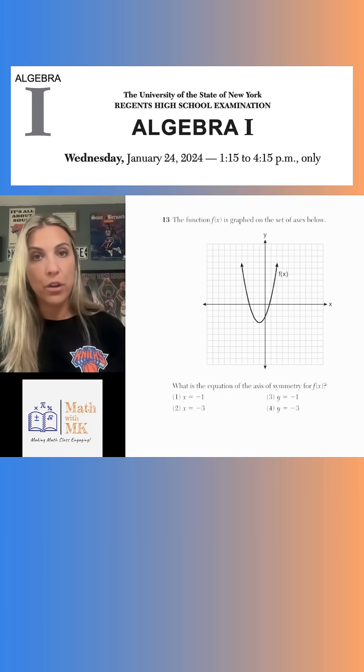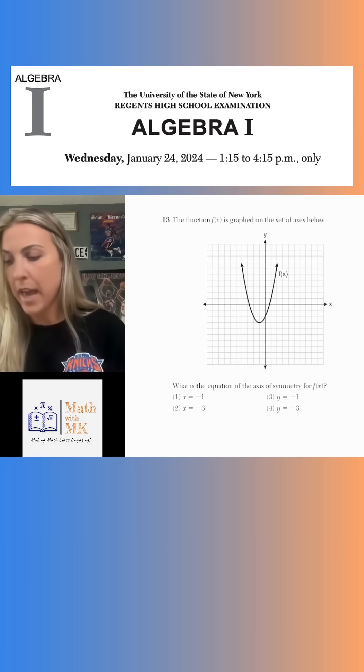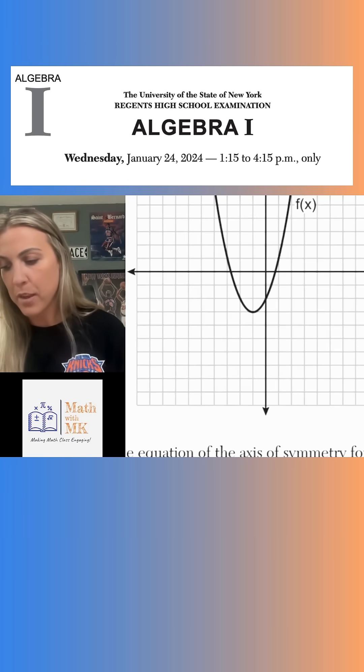The axis of symmetry is a vertical line that passes through the vertex of the parabola and splits it in half. So the vertex of the parabola, zoom in a little bit, is this blue dot that I'm drawing right here.